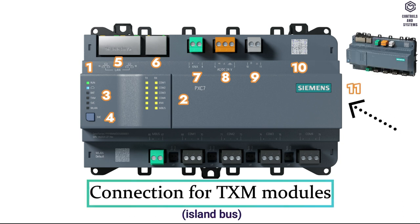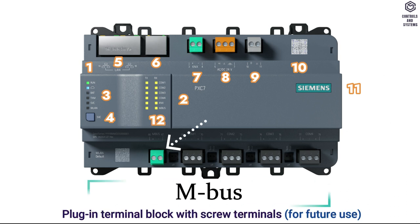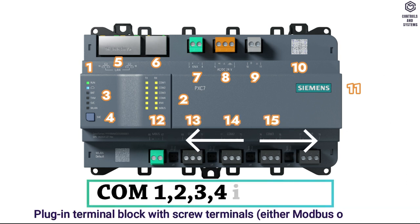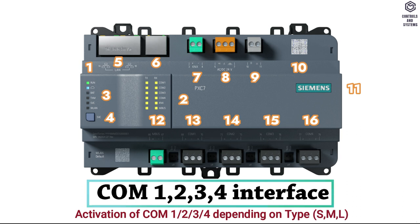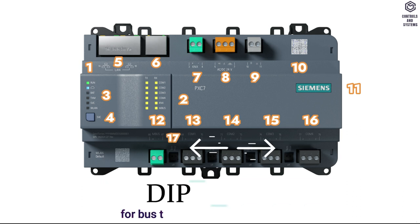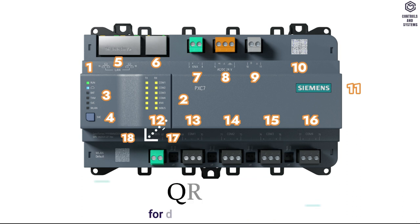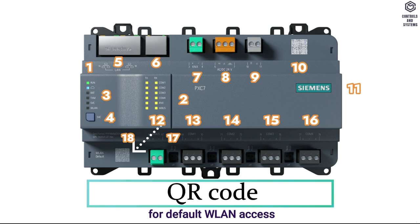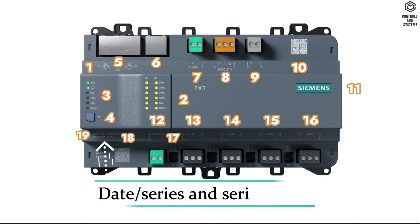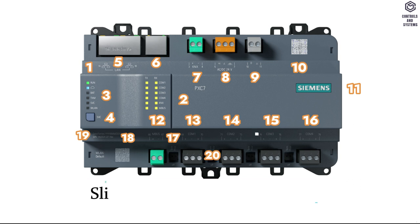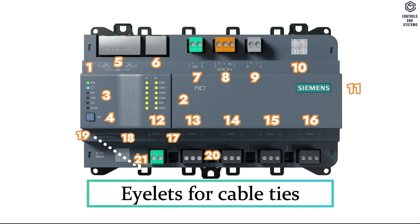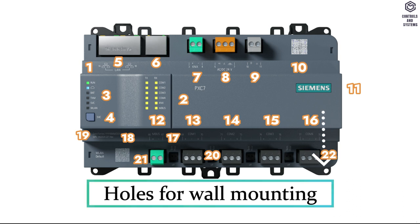Continuing mechanical design: 11) Connection for TXM Modules, 12) MBUS, 13/14/15/16) Communication Interface (either Modbus or MS-TP), activation depending on type, 17) DIP Switches for Bus Termination and Polarization, 18) QR Code for Default WLAN Access, 19) Date/Series and Serial Number, 20) Slider for Mounting on DIN Rails, 21) Islets for Cable Ties, 22) Holes for Wall Mounting.